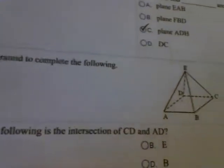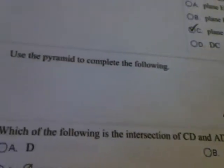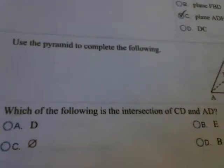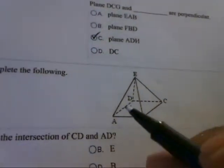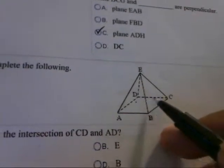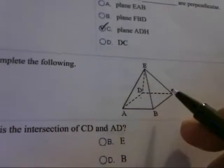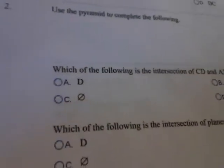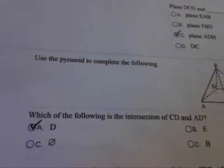Problem number two uses a pyramid. The first question asks: which of the following is the intersection of CD and AD? Here's CD, and here's AD. The intersection of those two is a point — in this case point D. So D is the intersection of CD and AD.